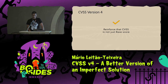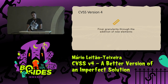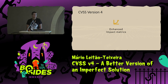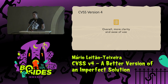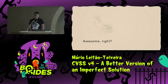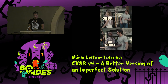In a nutshell, what CVSS v4 wanted to bring was: first, reinforcing that CVSS is not just a base score and all metric groups should be used; second, finer granularity by adding new elements, giving more score variations; improved impact metrics with the vulnerable and subsequent system distinction; and promoting accessible, transparent information — telling a better story overall with more clarity and ease of use.